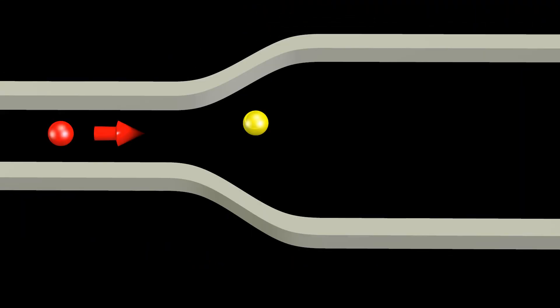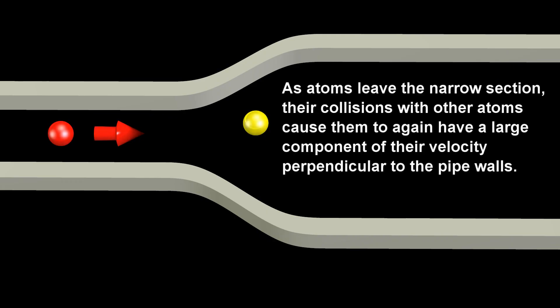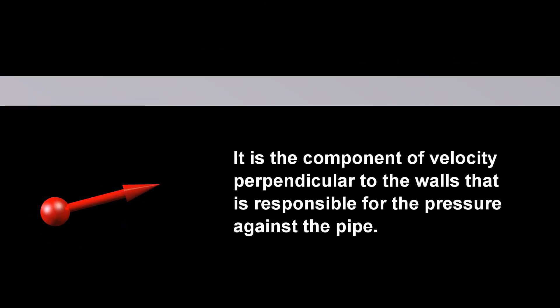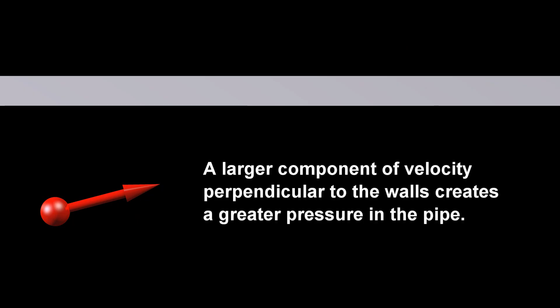As atoms leave the narrow section, their collisions with other atoms cause them to again have a large component of their velocity perpendicular to the pipe walls. It is the component of velocity perpendicular to the walls that is responsible for the pressure against the pipe. A larger component of velocity perpendicular to the walls creates a greater pressure in the pipe.